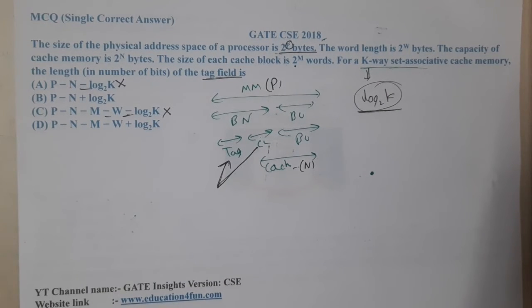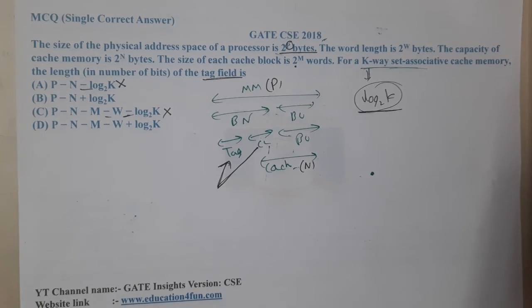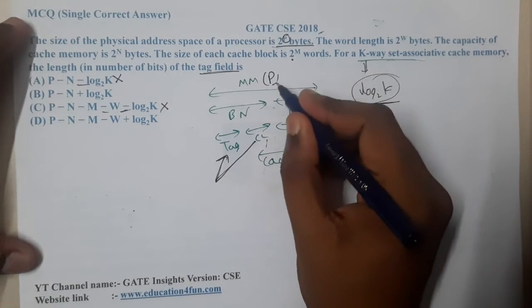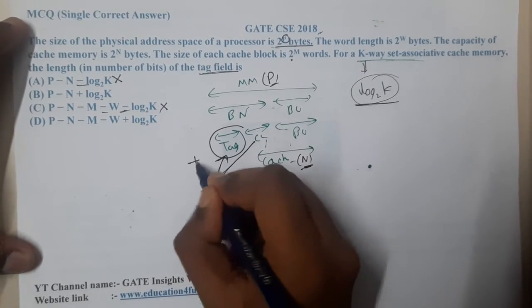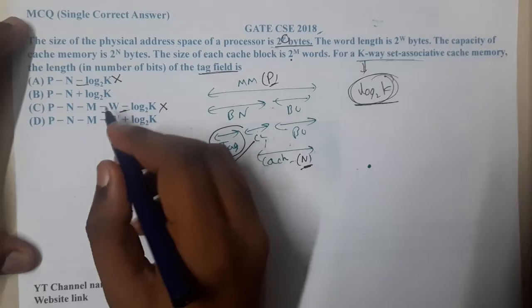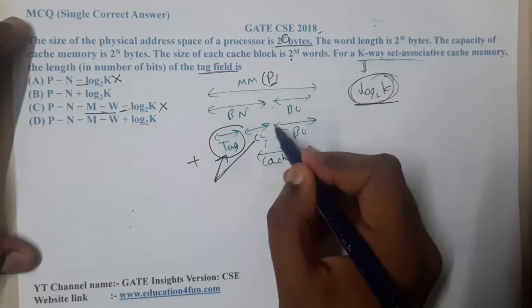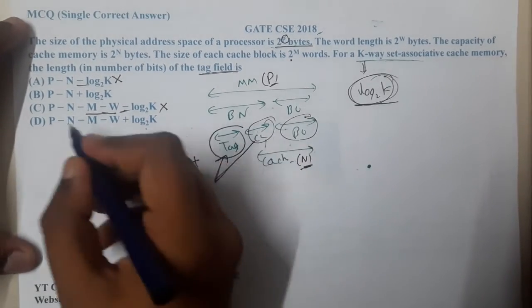Similarly here we are trying to find the tag. With easy understanding, you can say that it is nothing but P minus N, which means you will get this part plus this value. Why do we need the concept of M and W when they indicate these two values? With that understanding, you can clearly say that B is the correct answer.